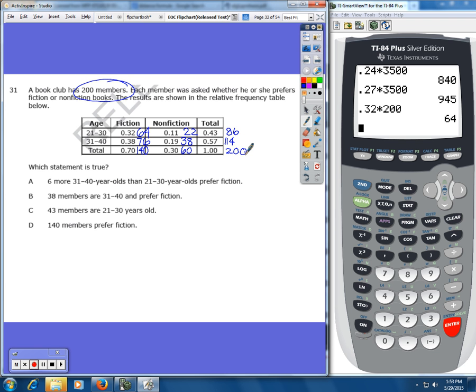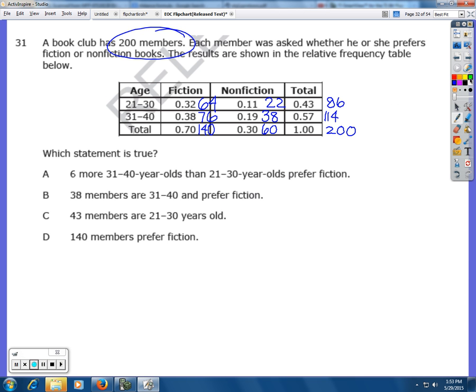So which statement is true? We're going to go through each one. Six more 31 to 40 year olds than 21 to 30 year olds prefer fiction. If we're looking at the 31 to 40 year olds, 76 of them prefer fiction. And then the 21 to 30 year olds, 64 of them prefer fiction. So is that six more? No it's not six more. So it's not going to be A.